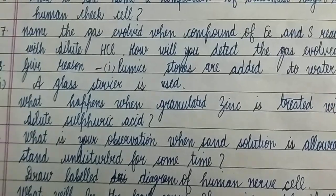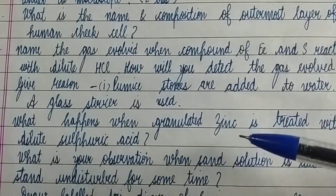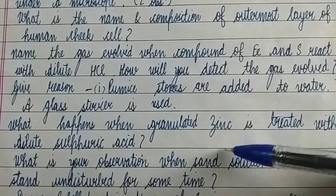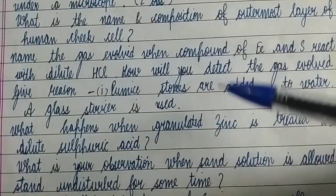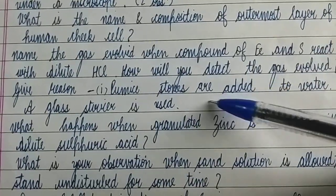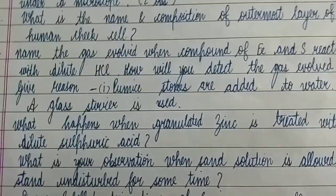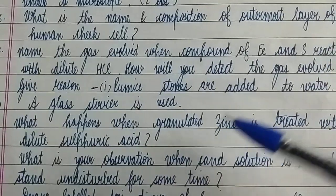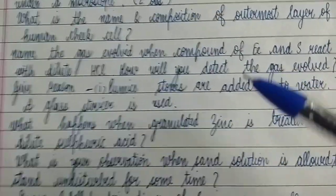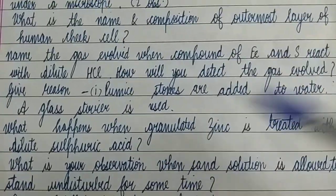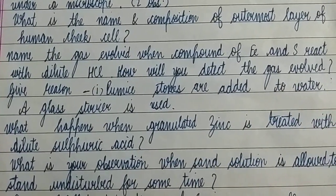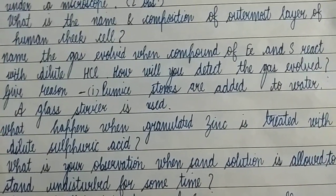Ninth question: What happens when granulated zinc is treated with dilute sulfuric acid? This is a similar question from your Chemistry second chapter activity. These are very important questions — you have to learn all your results and observations especially for this activity, because you need to give a proper answer.